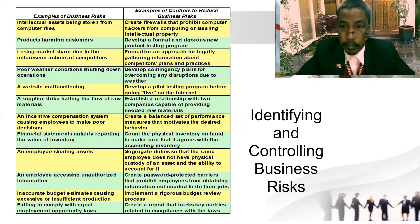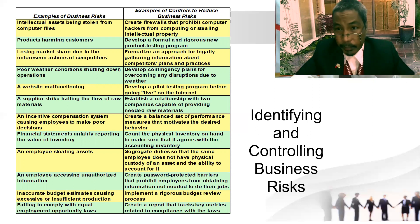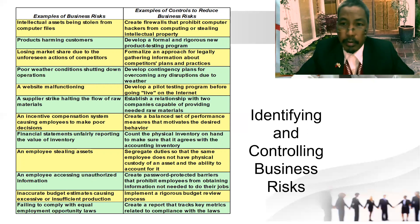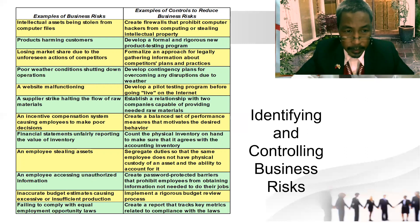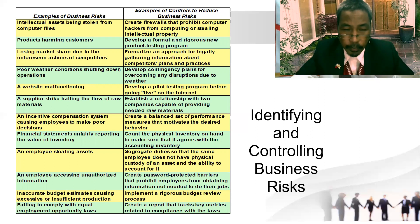There is a massive technology boom in online acceptance of businesses and companies going into this type of function for the company's benefit. Number six — a supplier strike halting the flow of raw materials. We have to be prepared: establish a relationship with two companies capable of providing the materials, not relying on only one supplier.